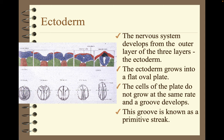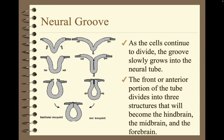The nervous system develops from the outer layer of the three layers, the ectoderm. The ectoderm forms into a flat oval plate. The cells of the plate do not grow at the same rate, and a groove develops, known as a primitive streak — this will become the central nervous system. As the cells continue to divide, the groove slowly grows into a neural tube. The front, or anterior, portion of the tube divides into three structures that will become the hindbrain, the midbrain, and the forebrain.